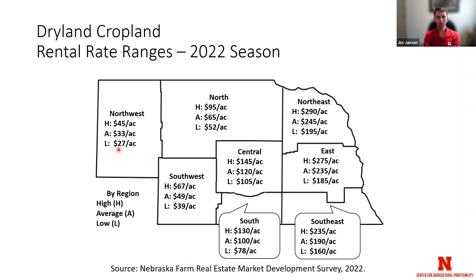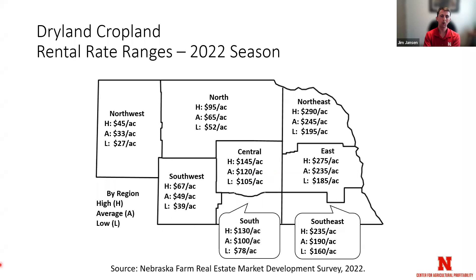With respect to regional averages, let's talk about the central district. You'll see the acronym HAL on your screen, which stands for High grade, Average, and Low grade. The high grade is the high-third average, the low grade is the low-third average, and overall average is the average. As an example, the upper-third average was $145 an acre, the low-third average was $105, and the overall average was $120. We simply ask respondents what they estimate the low-third and upper-third average cash rents are.